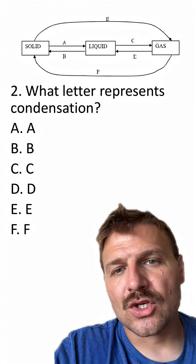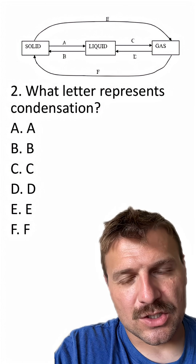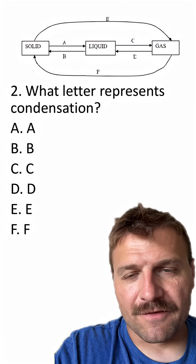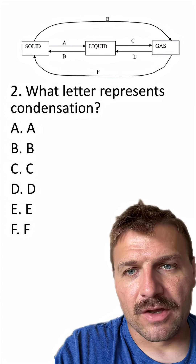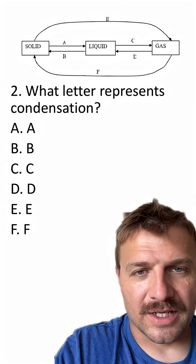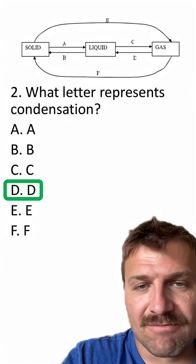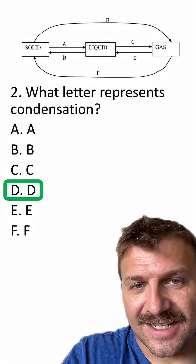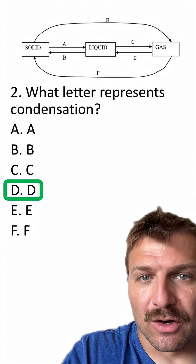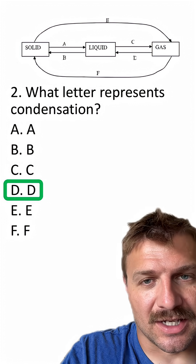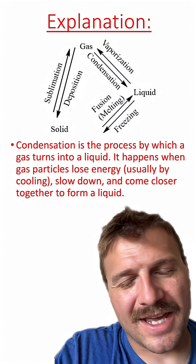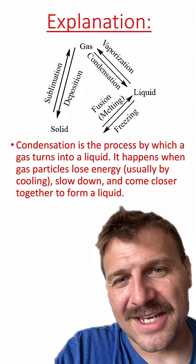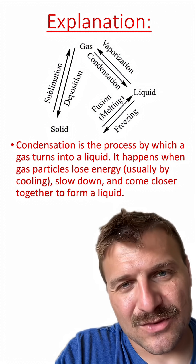Question two: what letter represents condensation? Each of the different arrows represents the phases going from solid, liquid, and gas. The answer here is D, going from a gas to a liquid. Here's an explanation if you need it, but remember: condensation is going from a gas to a liquid.